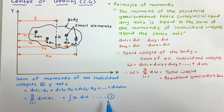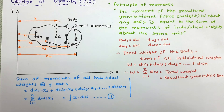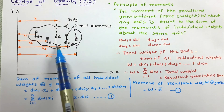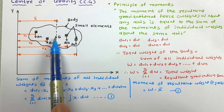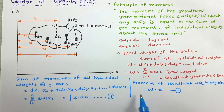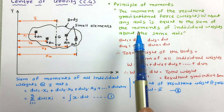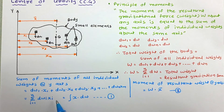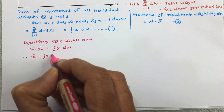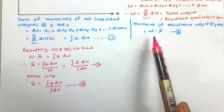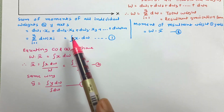Now let us work out the moment of the resultant weight about the y-axis. The total weight of the body is W and the distance of the centroid from the y-axis is x̄. So the moment of the resultant weight about the y-axis is W × x̄. This is equation 2. According to the principle of moment, equation 1 and equation 2 are equal. Equating the two: W × x̄ = ∫x dw.